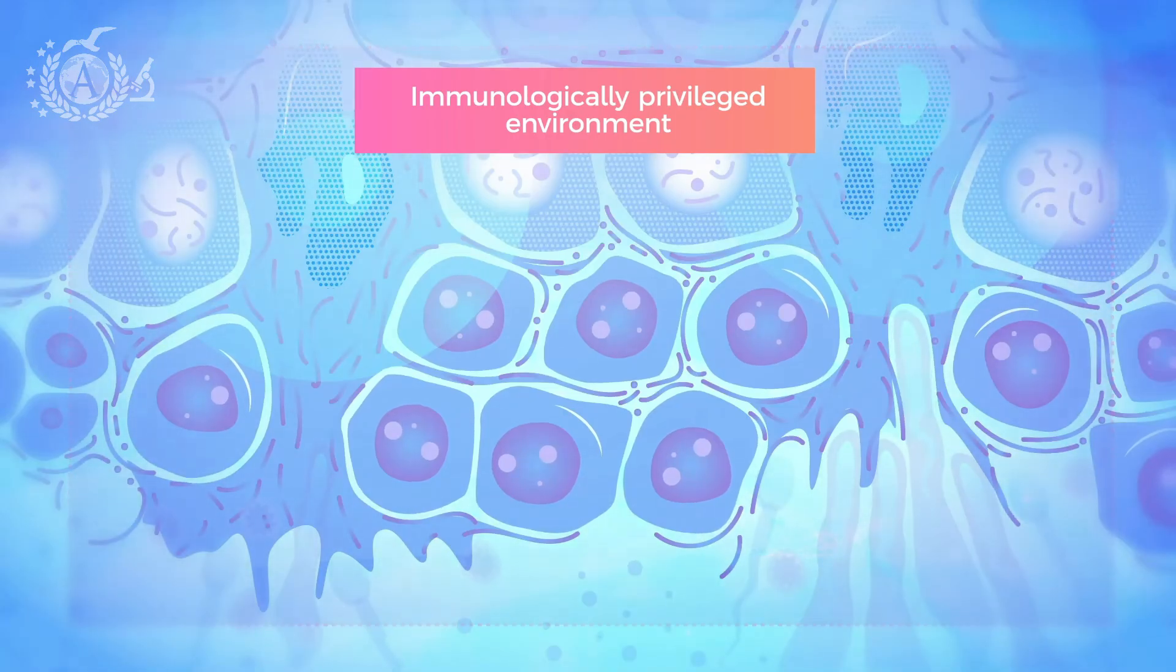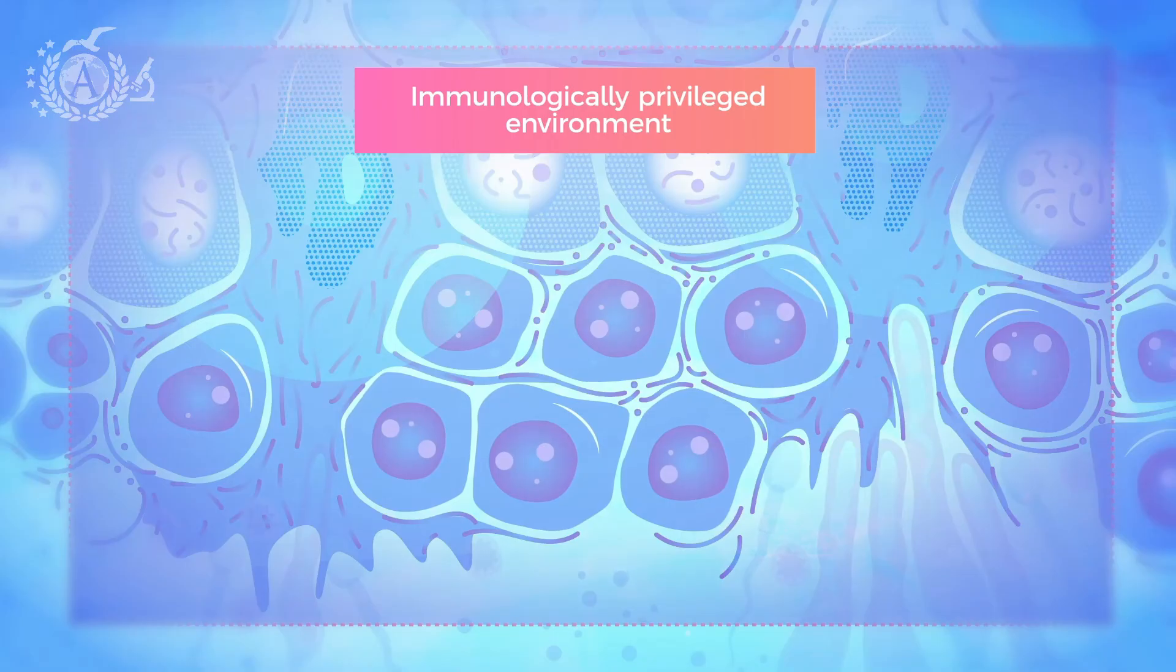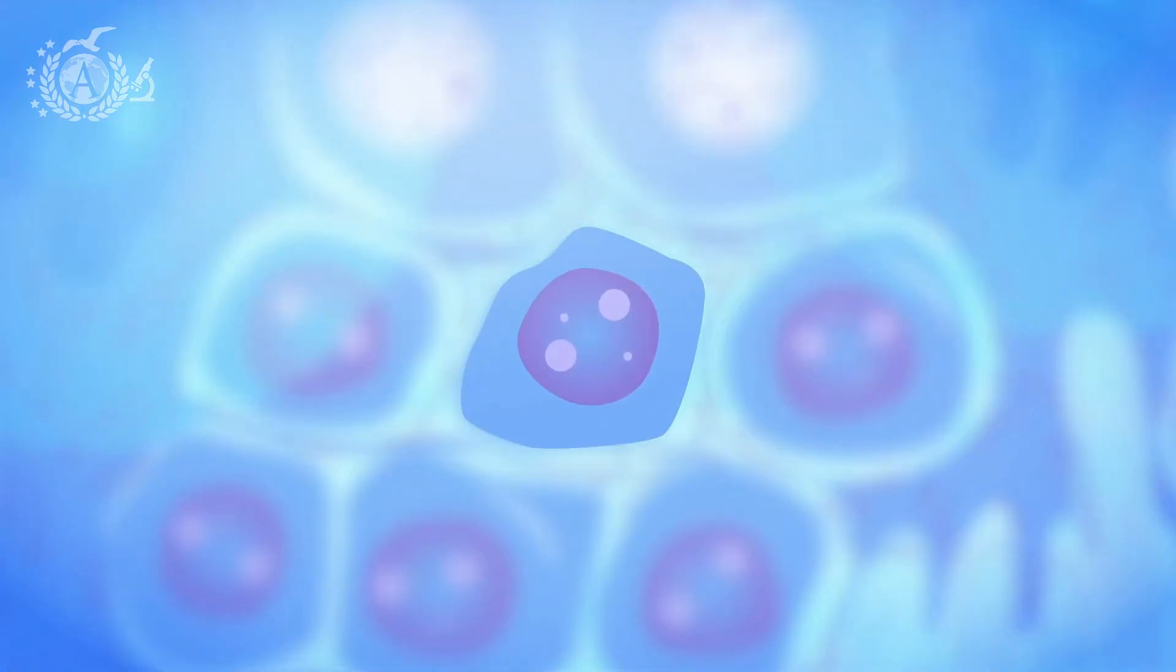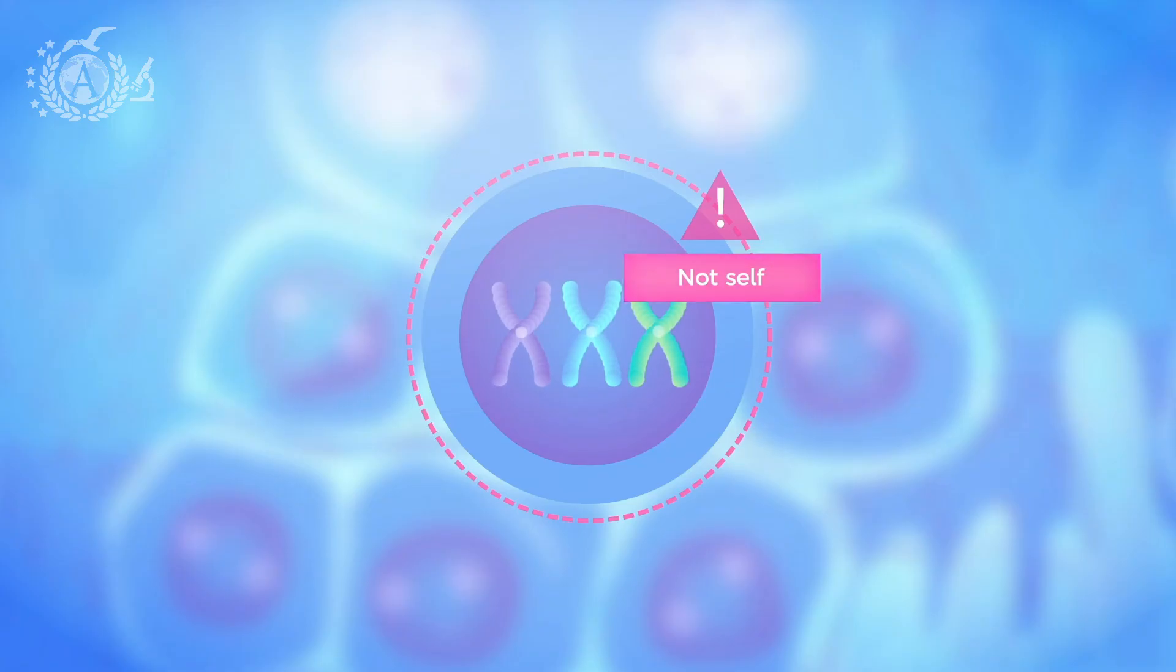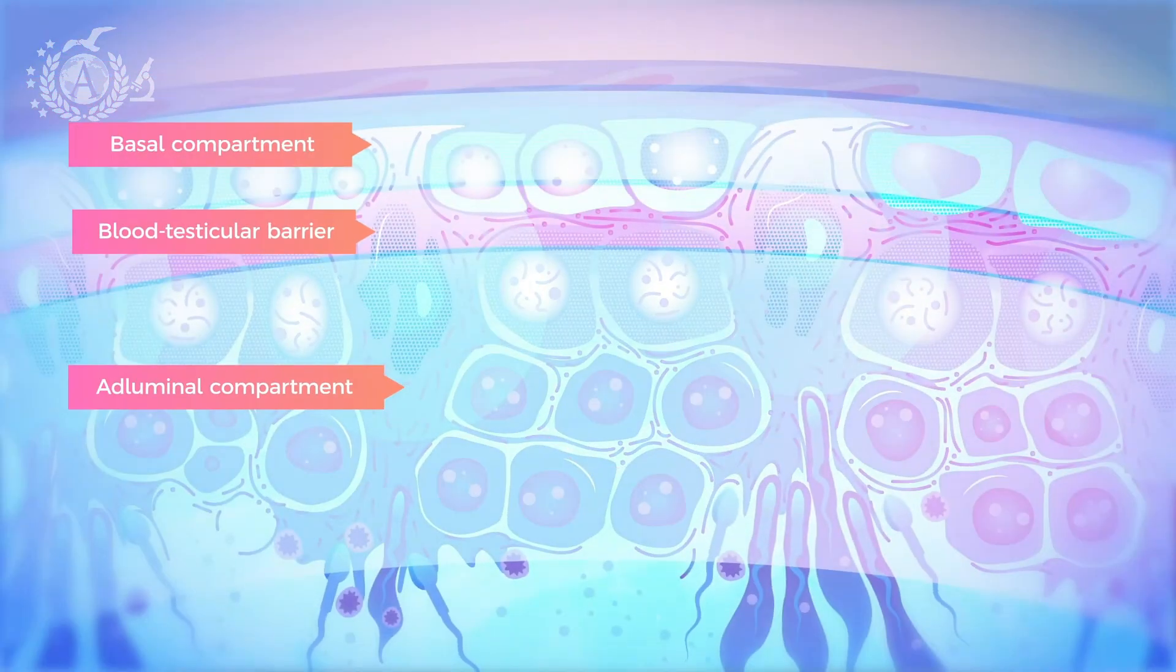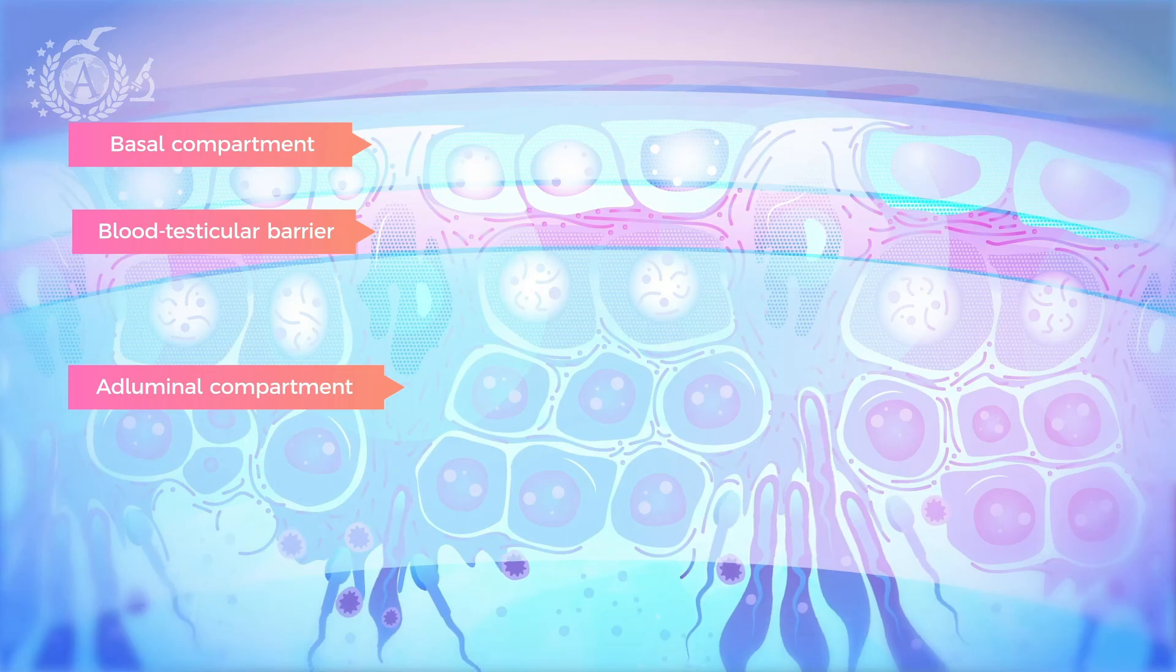So, Sertoli cells help to delimit an immunologically privileged environment. This compartment is in direct contact with the tubular fluid produced by Sertoli cells. This might seem a paradox, but there is actually a real immunological reason why the immune cells do not recognize the germ cells themselves, triggering an inflammatory and destructive response to the damage of the entire testis. Being haploid cells, they are unable to properly produce antigens to display on their membrane as a recognition plate, and that's why the immune system attacks them and recognizes them as not-self. However, thanks to the blood testicular barrier, the adluminal compartment is completely isolated from the rest of the organism, thus ensuring the protection of germ cells.